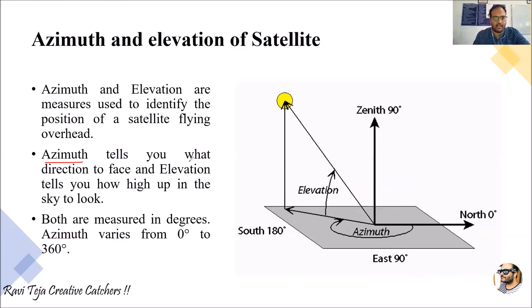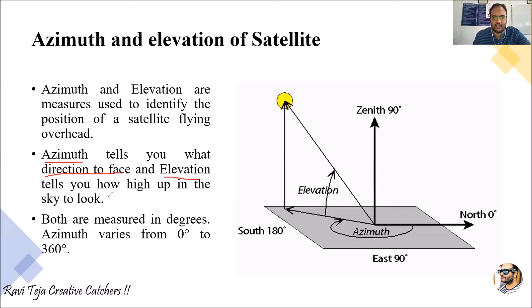Azimuth tells you in what direction the antenna should face. Azimuth is the angle made by an antenna towards the direction of a satellite — in what direction the antenna needs to move such that the satellite will have a good communication system with the earth station.